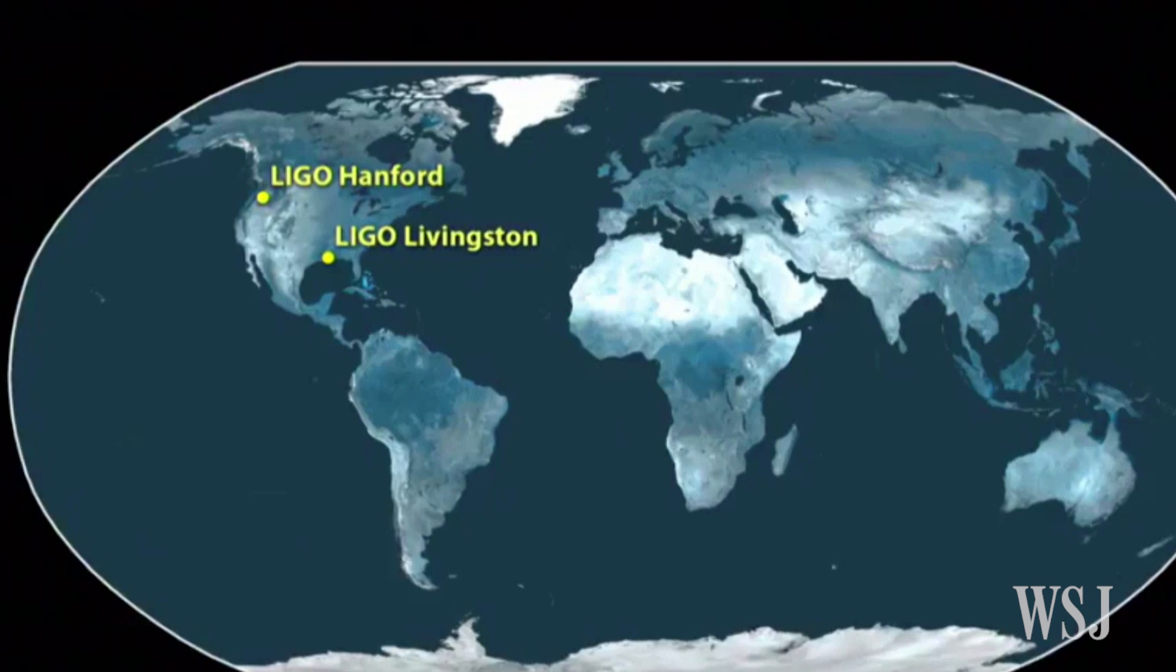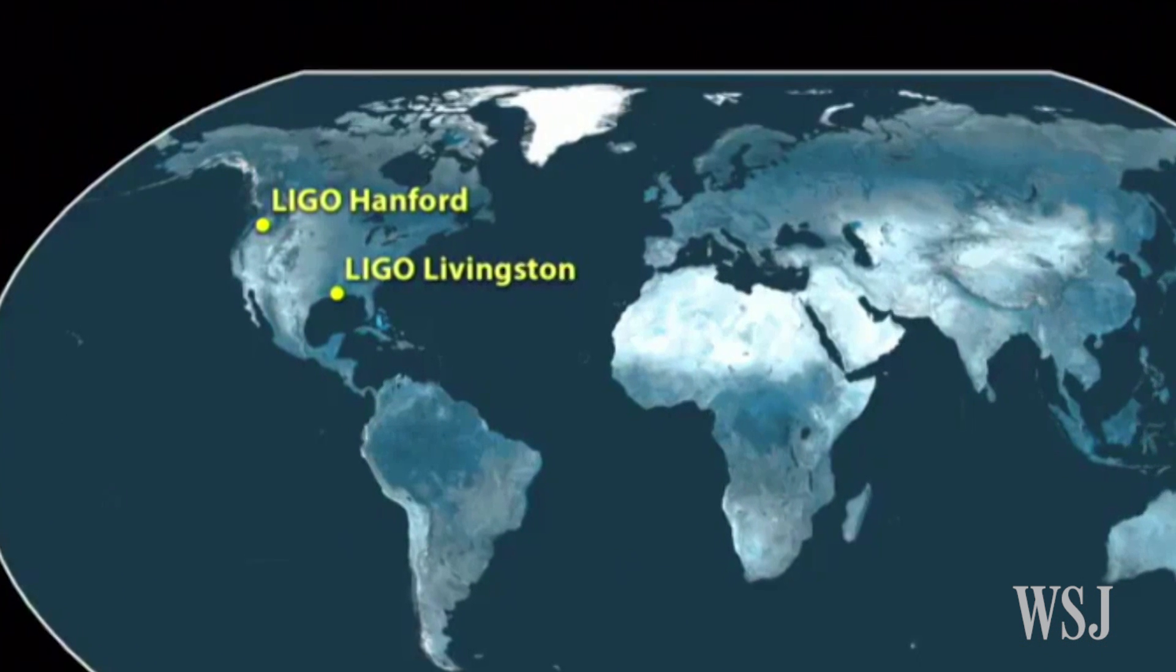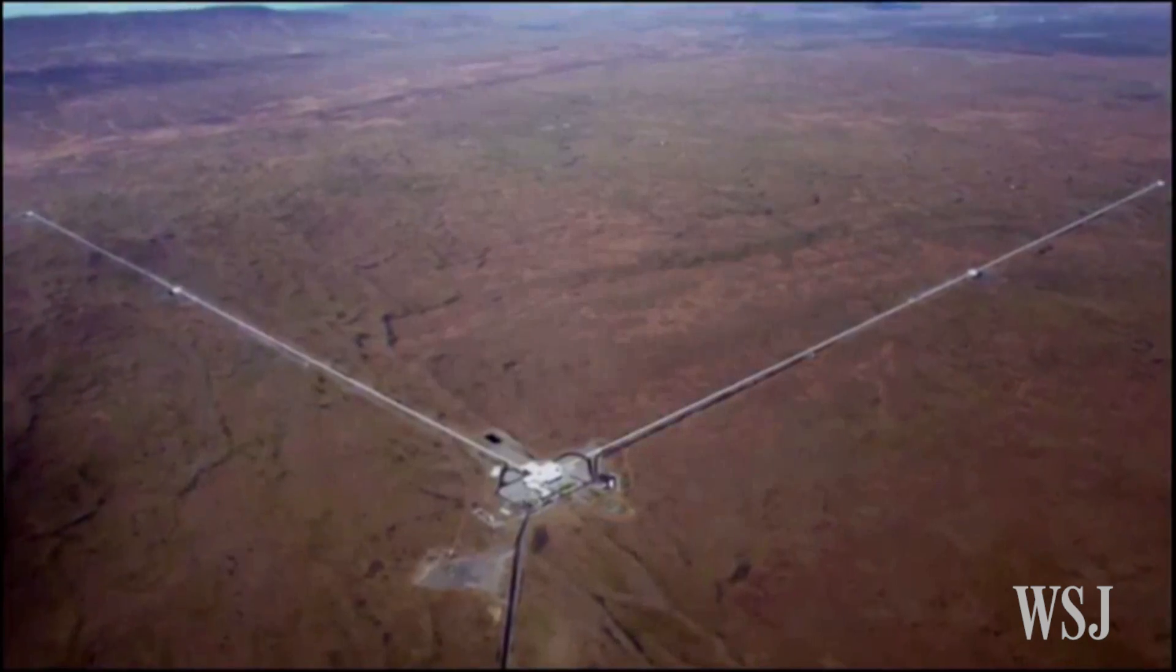They used two gravitational wave observatories, one in Hanford, Washington, and one in Livingston, Louisiana, to measure the waves and cross-check their results.